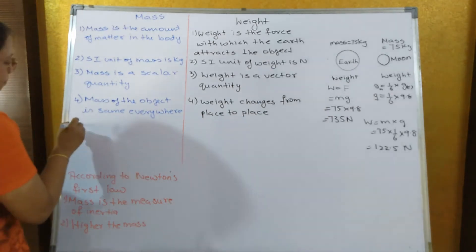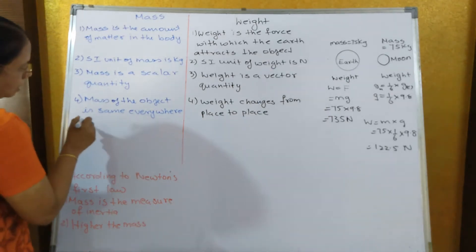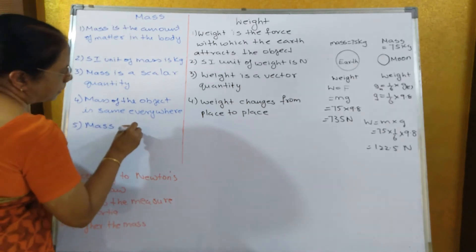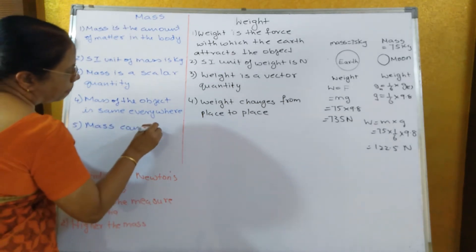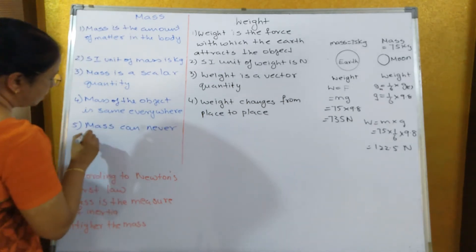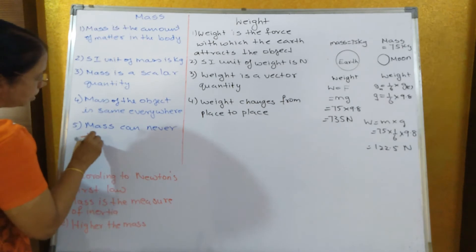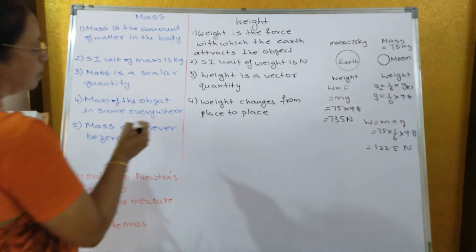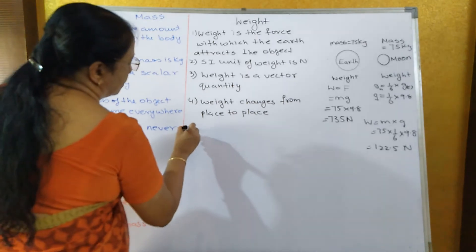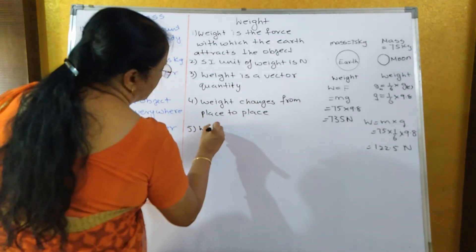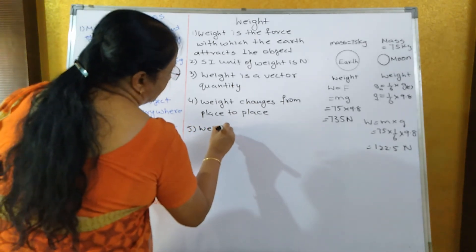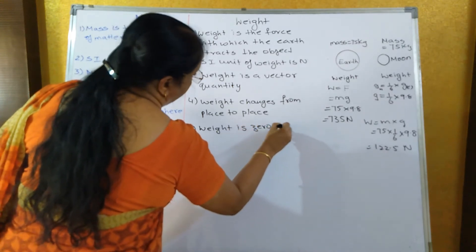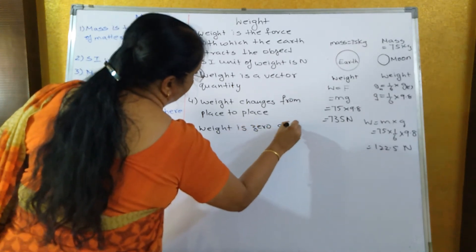Fifth point: mass can never be zero. But weight can be zero — weight is zero at the center of the earth.